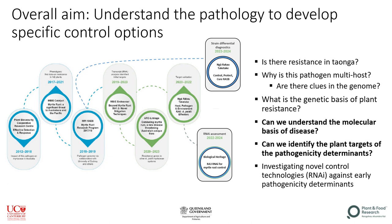We know there is resistance in tāonga plants but we don't know why this pathogen is able to operate as a multi-host rust. We do know that there is resistance but we do not actually understand the genetic basis of plant resistance — but can we understand the molecular basis of disease and help identify which targets in the plant are being targeted by the pathogen to manipulate the plant cells so the pathogen can successfully complete its replication cycle?